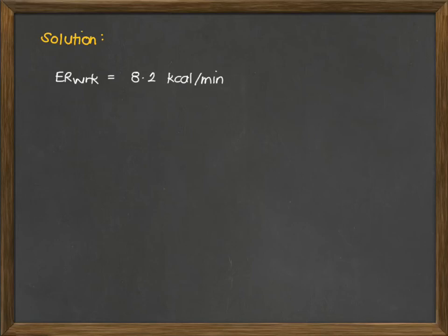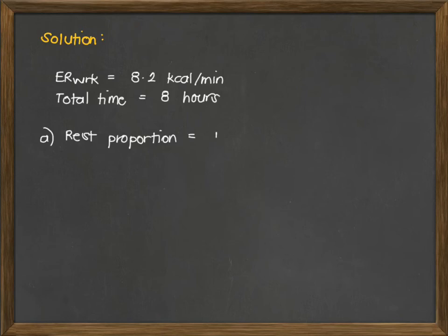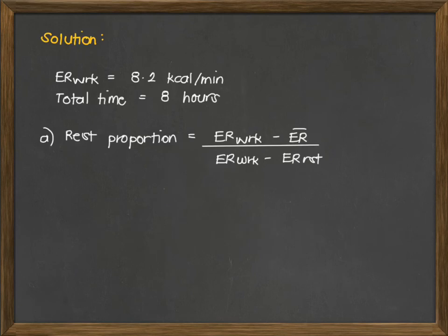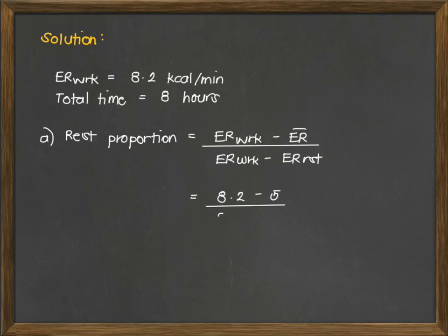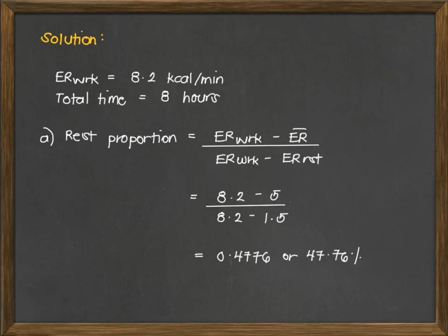For our solution: ER work is 8.2 kcal per minute, total time is 8 hours. For the rest proportion formula: (ER work minus ER bar) over (ER work minus ER rest). ER rest is a constant 1.5 kcal per minute. Substituting: (8.2 minus 5) over (8.2 minus 1.5), which gives 0.4776 or 47.76%.